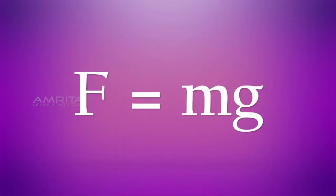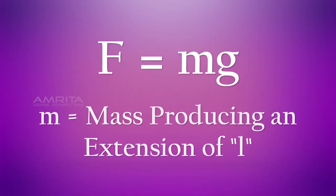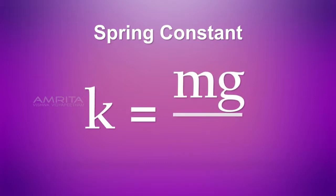But F is equal to MG, where M is the mass producing an extension of L. That is, the spring constant K is equal to MG by L.